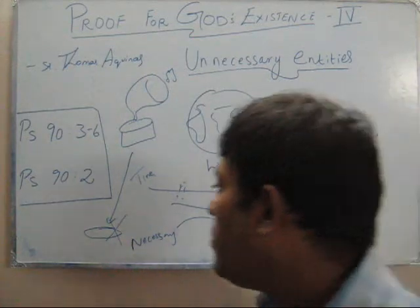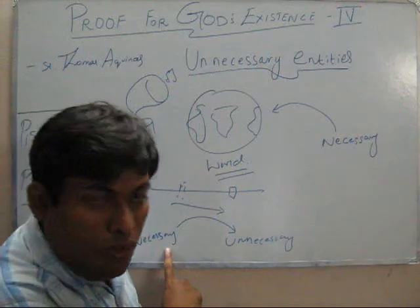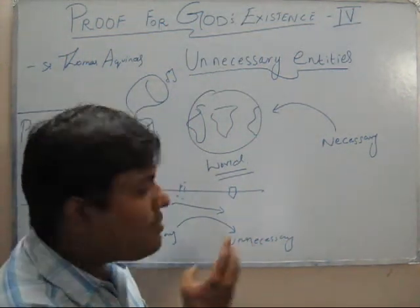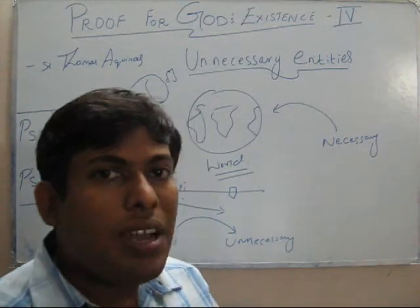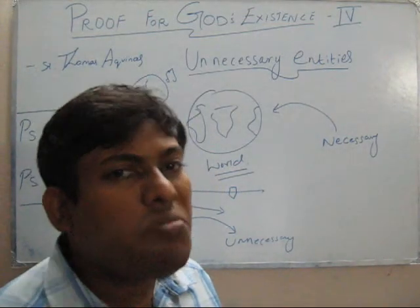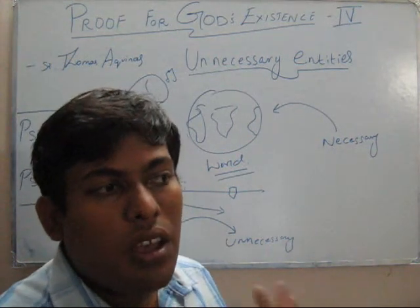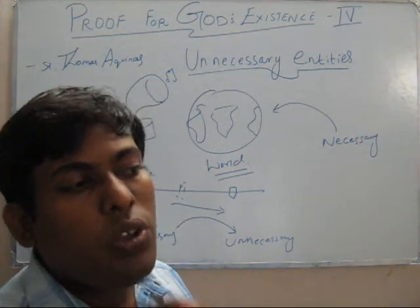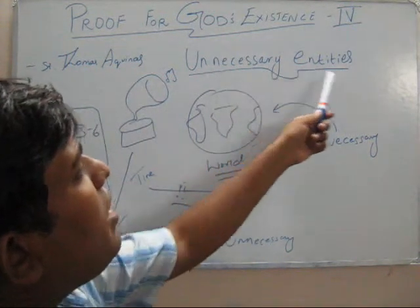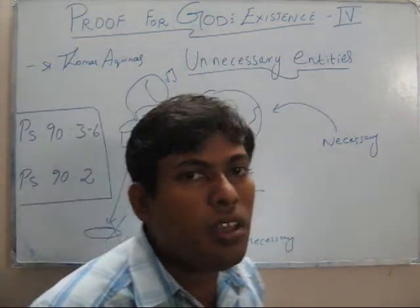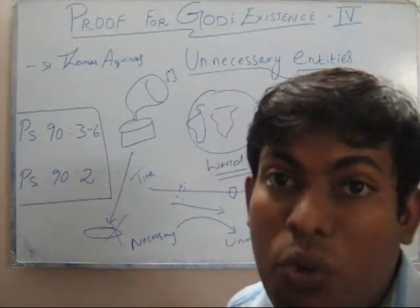All things that are necessary will become unnecessary as time progresses. This is a fact we can observe when we look back into the pages of history — man has substituted old things with new, and the old things have been discarded. So the presence of unnecessary entities is something we can clearly observe. But how does that prove God?